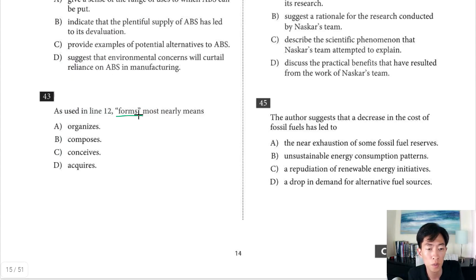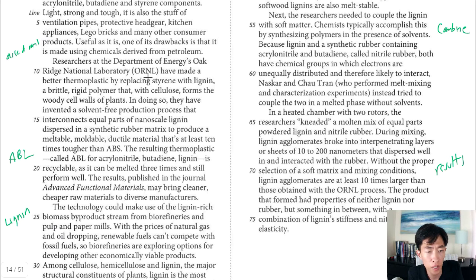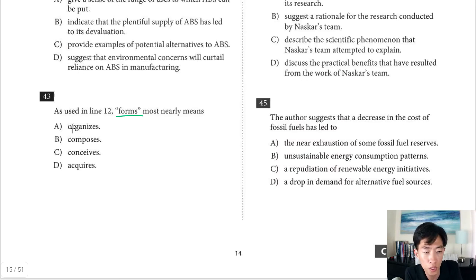Question 43. As used in line 12, forms most nearly means. So let's take a look at it. Let's start from line 9. Researchers at the ORNL have made a better thermoplastic by replacing styrene with lignin, a brittle rigid polymer that with cellulose forms the cell walls of plants. That's the sentence we want to keep in mind. So what's another word for forms? Lignin, you can say, makes up. In other words, the idea is that it's a part of it. So lignin makes up the woody cell walls of plants. Does lignin organize the cell wall of plants? Definitely not. Does lignin compose the cell wall of plants? That's definitely a possibility because compose in this case would mean to constitute or make up. Choice C. Does lignin conceive the cell wall of plants? Doesn't make sense. Conceive is to sort of like form. You conceive of an idea or you conceive of a plan in your mind, meaning to make it. Choice D. Does lignin acquire the cell wall of plants? Acquire means to get or to obtain. So also doesn't make sense. So the best choice is B. Compose.